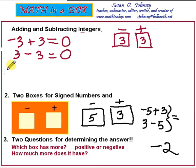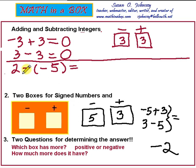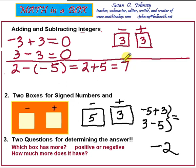Now let's look at some problems that have double signs. Let's take 2 and then a negative negative 5. Remember, a double negative is the same as the opposite of a negative — the opposite of negative 5 is positive 5. So these problems must always be rewritten before we use the boxes. Any time you have double signs, rewrite them first. So 2 plus 5 — that's a first grade problem — without the boxes we know that is 7.